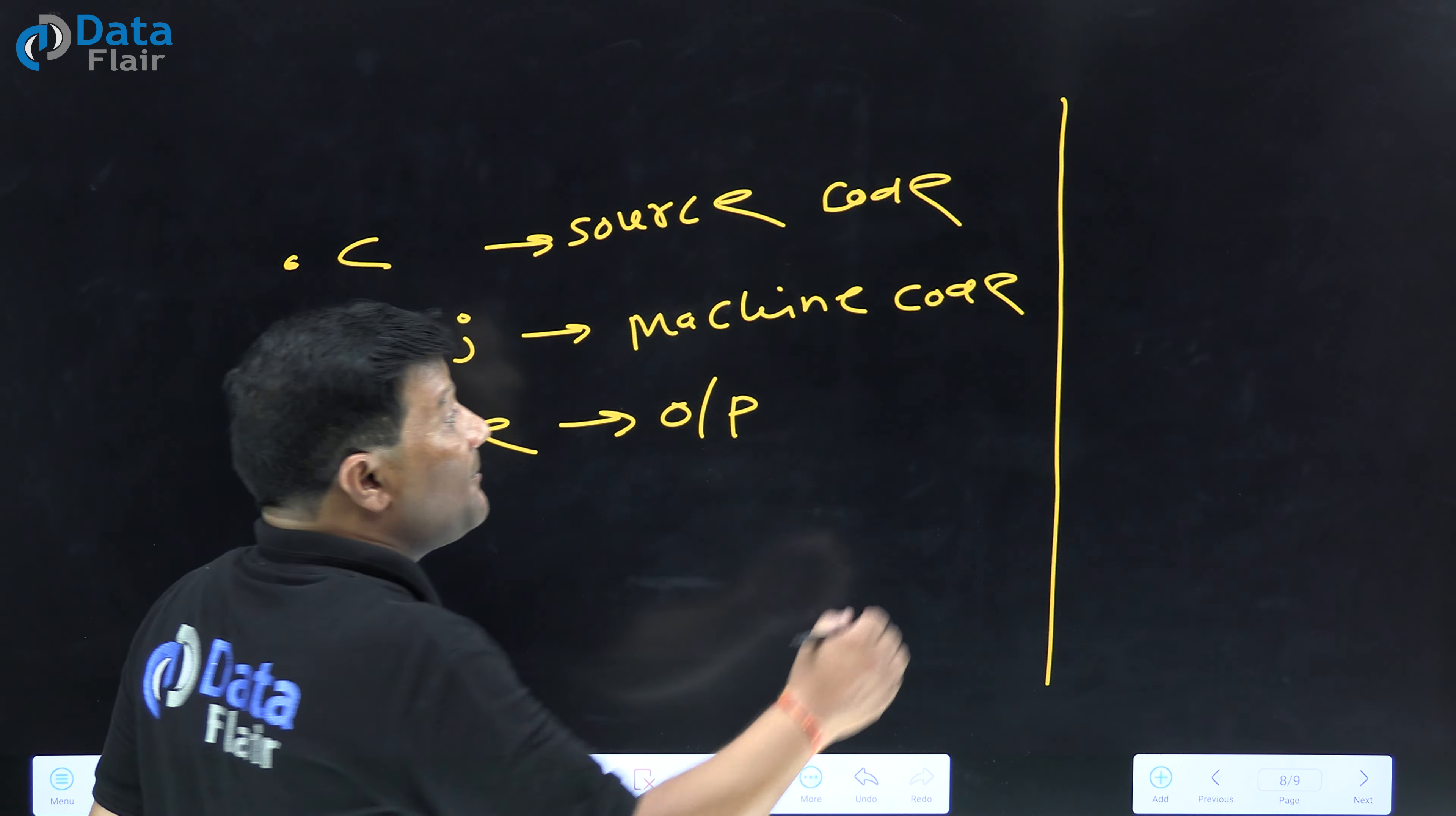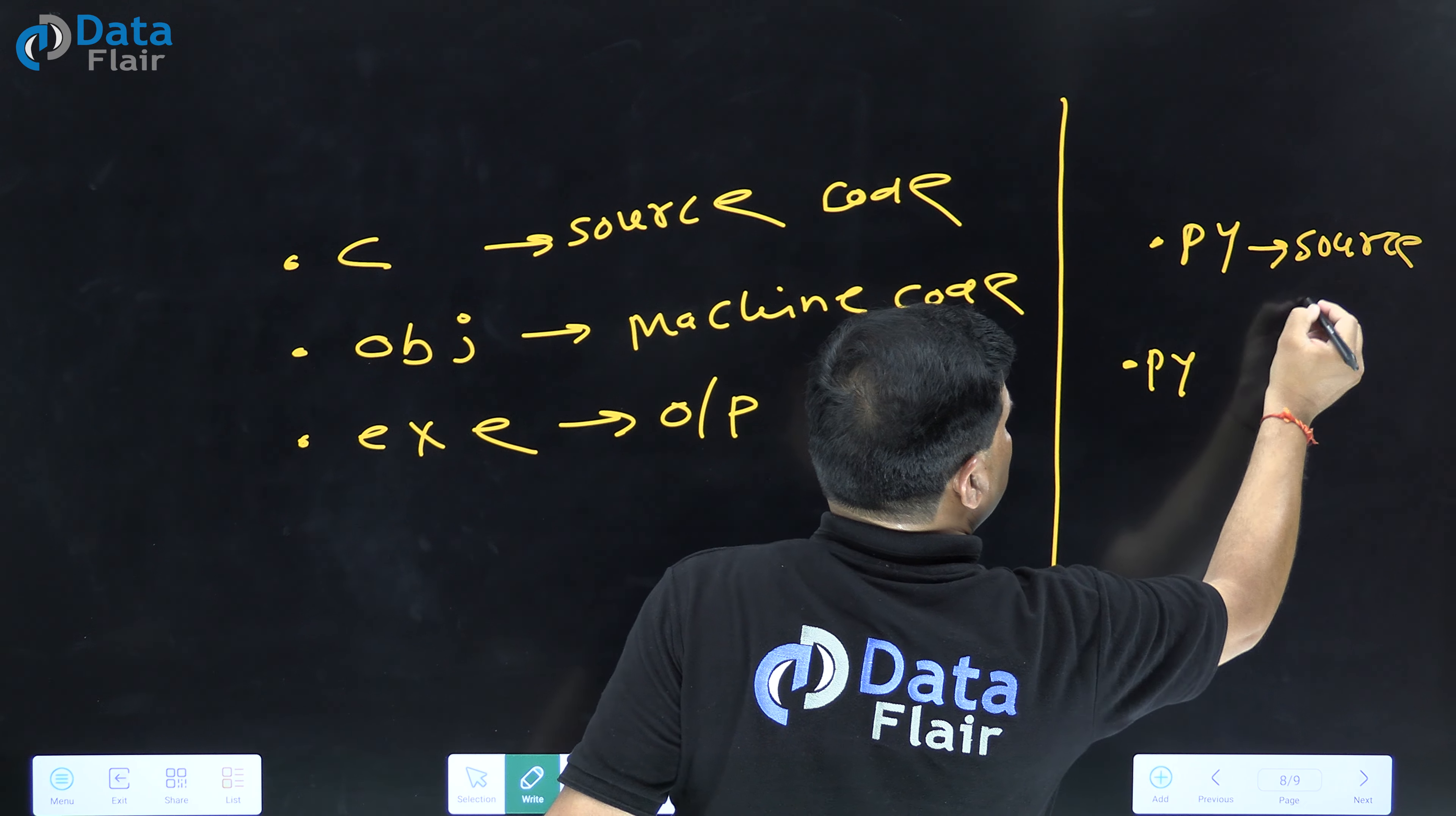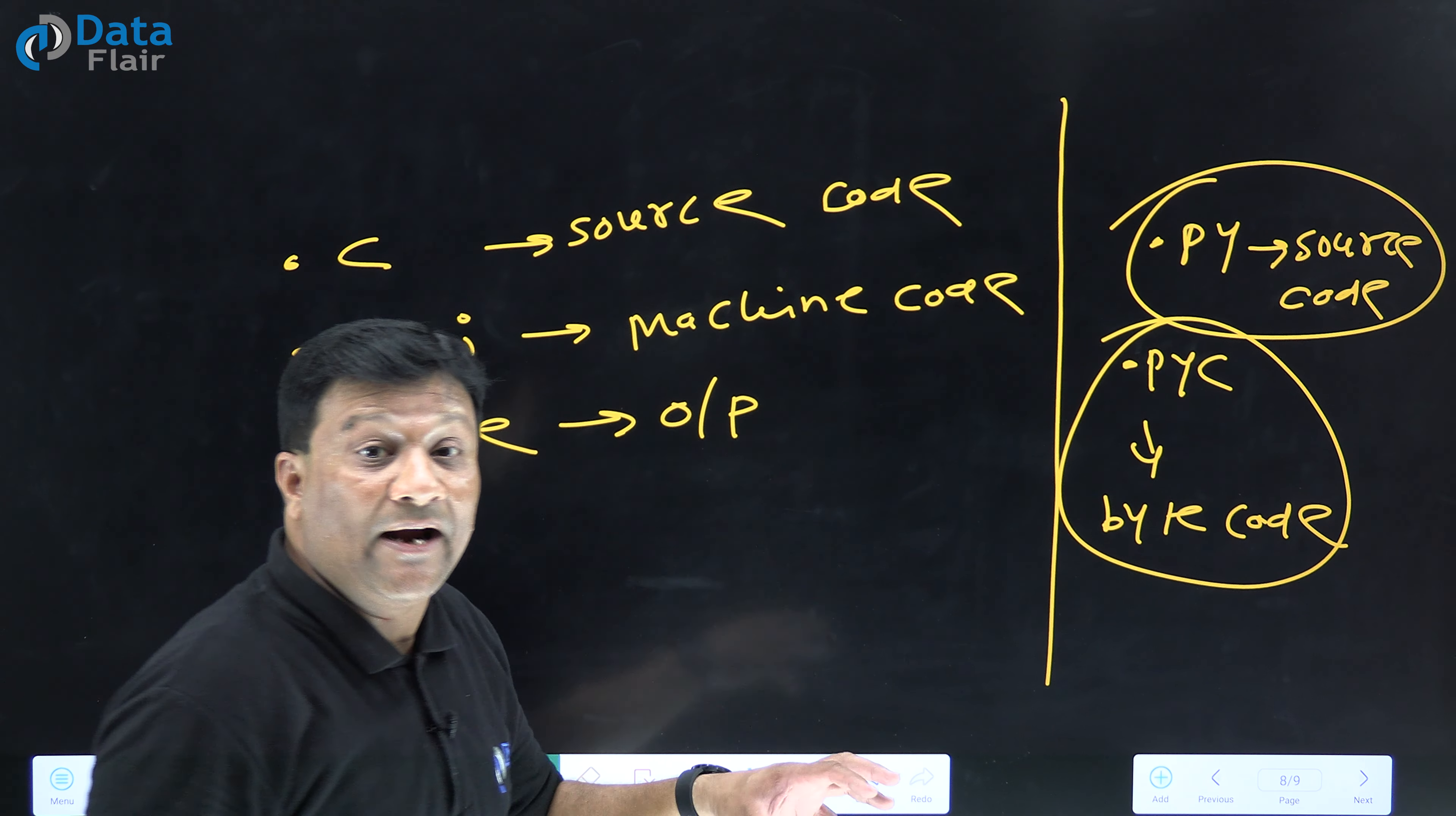Python ka program creates two files: .py and .pyc. .py file contains source code and .pyc file contains bytecode of the program.